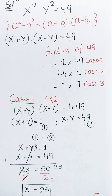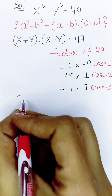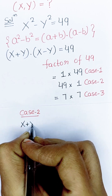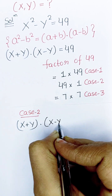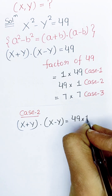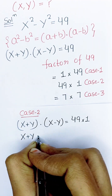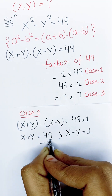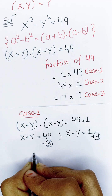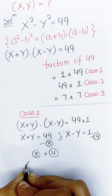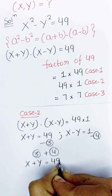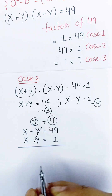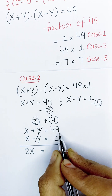Now we go to Case 2. Case 2: (x plus y) into (x minus y) is equal to 49 into 1. So x plus y equals 49 and x minus y equals 1. Adding these two equations, the y's cancel out, and x plus x gives 2x, which equals 49 plus 1, that is 50.